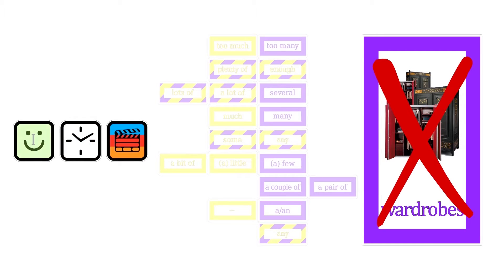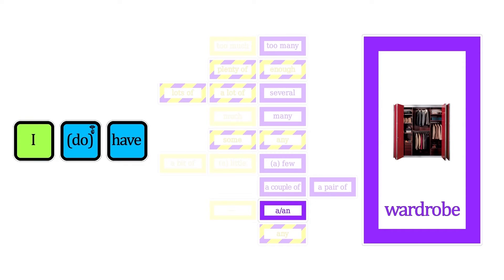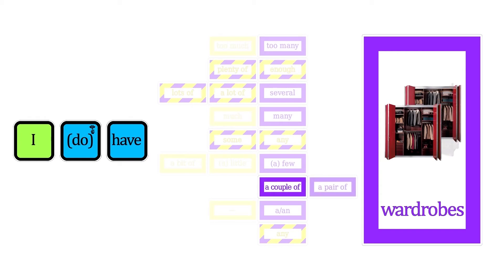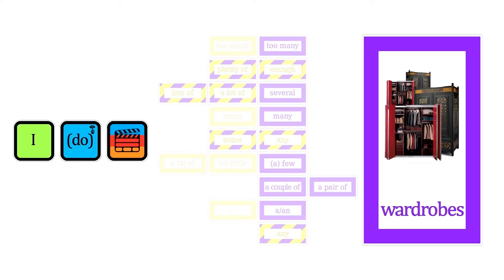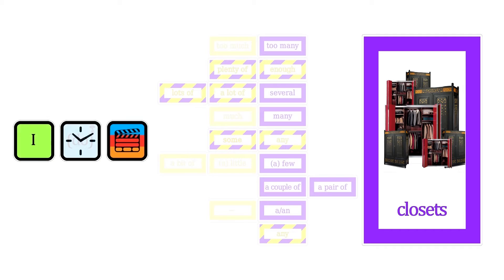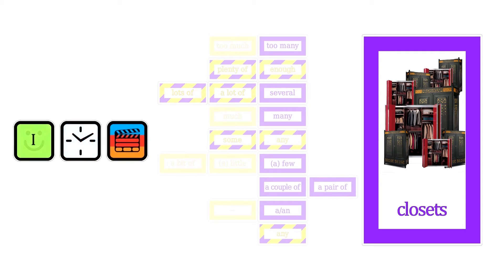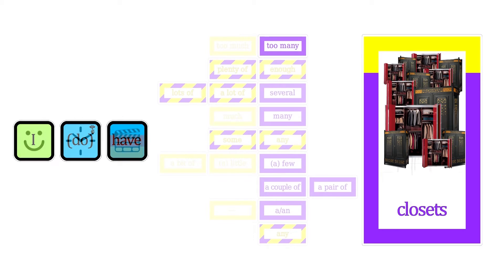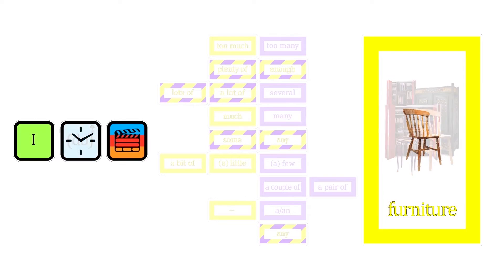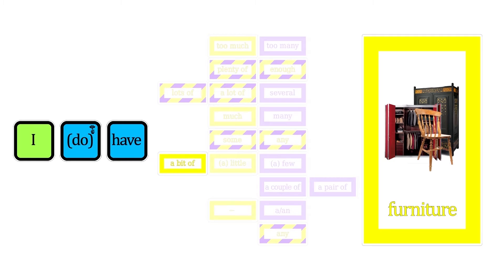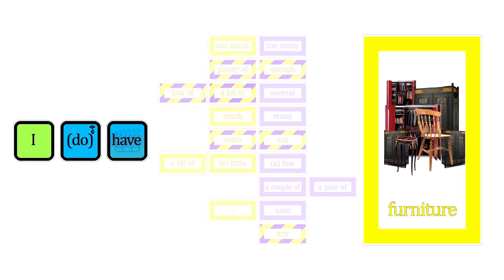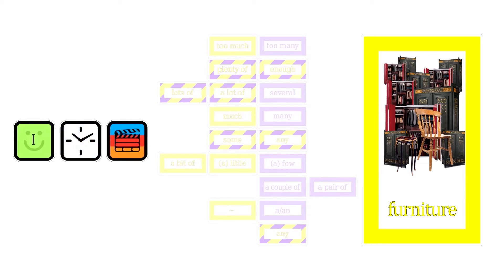Let's use wardrobe now. I don't have any wardrobes. I have a wardrobe. I have a couple of wardrobes, or I have a pair of wardrobes. I have a few wardrobes. I have some wardrobes. We can use a similar word: I have many closets. I have several closets, or I have a lot of closets, or I have lots of closets. I have enough closets. I have plenty of closets. I have too many closets. The word furniture is uncountable in English. I don't have any furniture. I have furniture. I have a bit of furniture, little furniture, or a little bit of furniture. I have some furniture. I have much furniture. I have a lot of furniture, or I have lots of furniture. I have enough furniture. I have plenty of furniture. I have too much furniture.